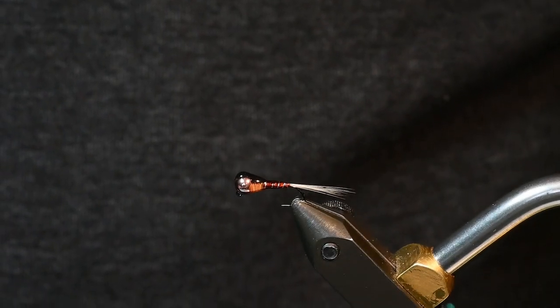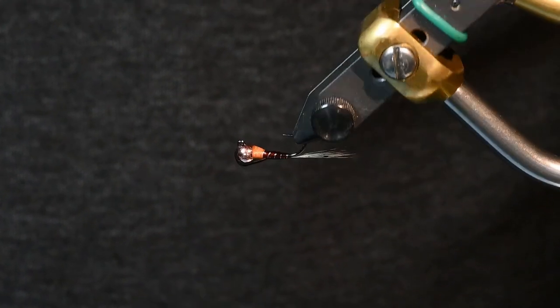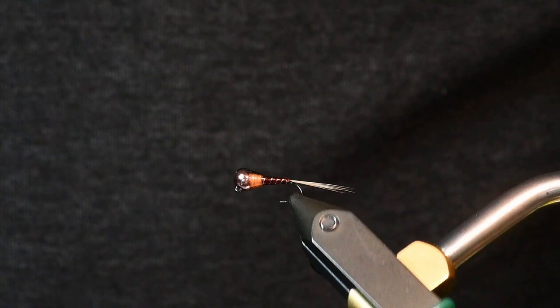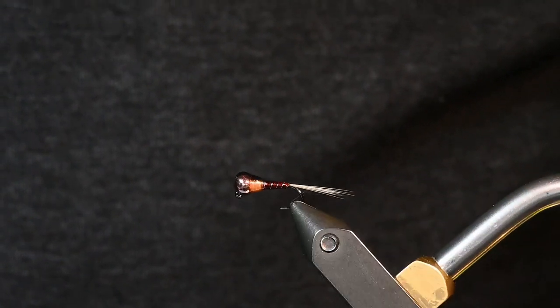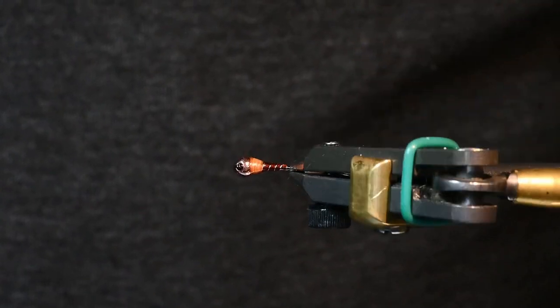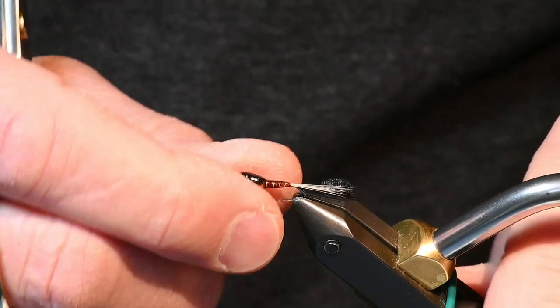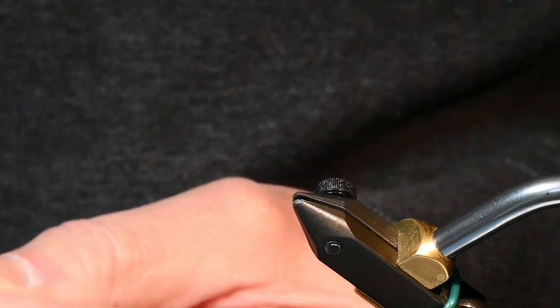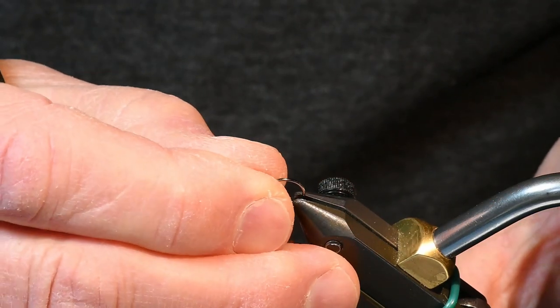I'll be tying a pheasant-tailed peridagon today. I've changed the body material from a pheasant tail to Vivas body quilt material, so this is a size 14. I've been tying a lot of these lately, so I thought it'd be a good opportunity to show how I tie them.